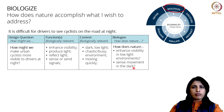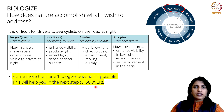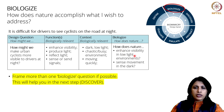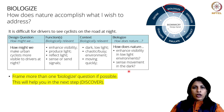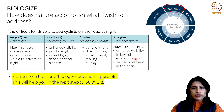At that point we said you should frame more than one biologize question to help you in the next step. Now that we are at the next step, let us see how that helps. You have biologized questions: 'How does nature enhance visibility in low light environments?' and 'How does nature sense movement in the dark?' You are going to discover organisms that enhance visibility in low light and organisms that sense movement in the dark.